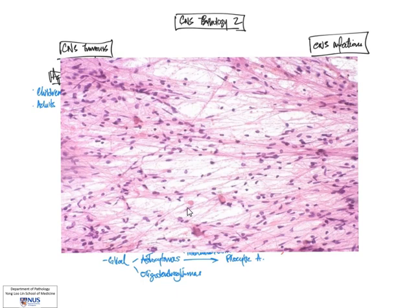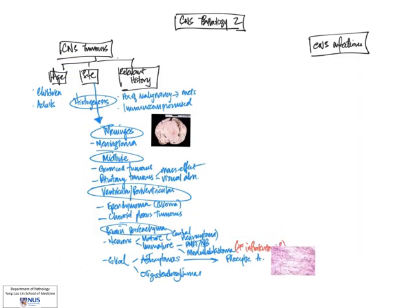It is known as a pilocytic astrocytoma because these tumor cells have got extremely long hair-like processes. And pilo refers to hair. So, essentially, we are saying that they are hair or hairy type cells and they are astrocytic in nature. And pilocytic astrocytomas are generally low-grade, so they are WHO grade 1. And if they are completely excised, the prognosis can be quite good.